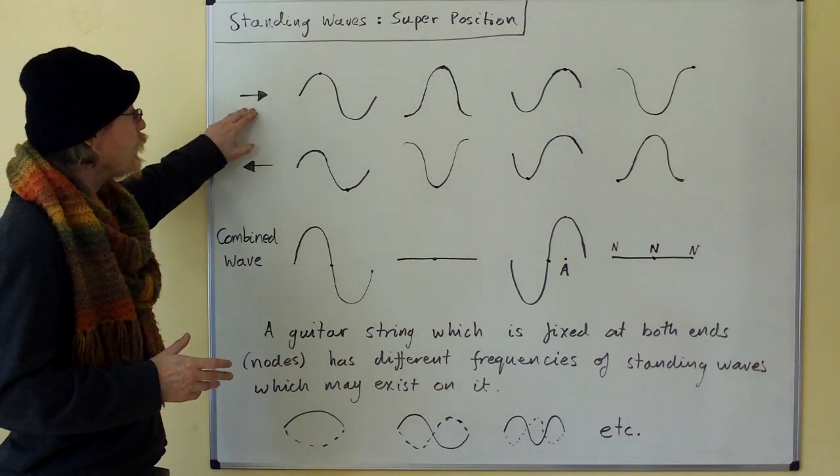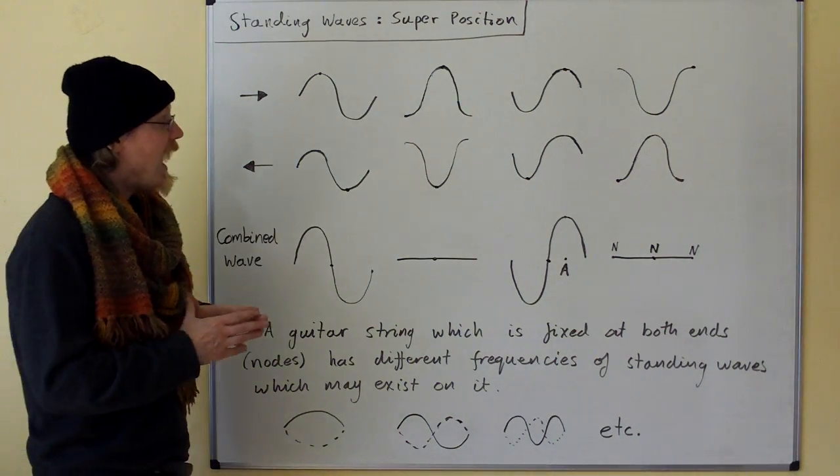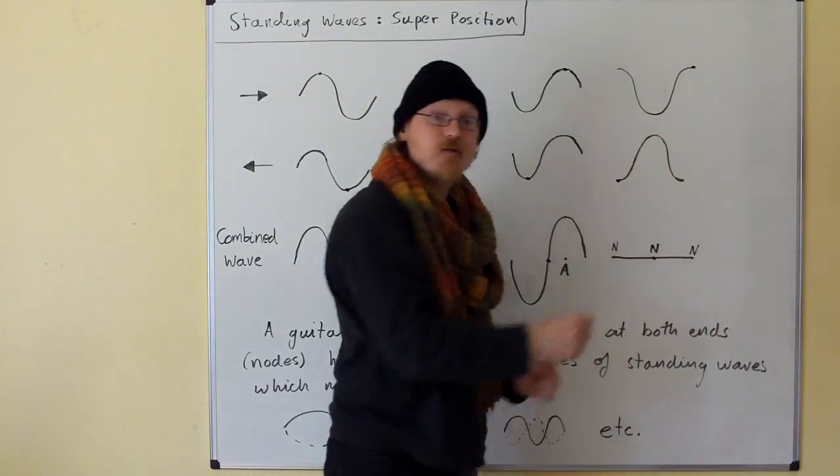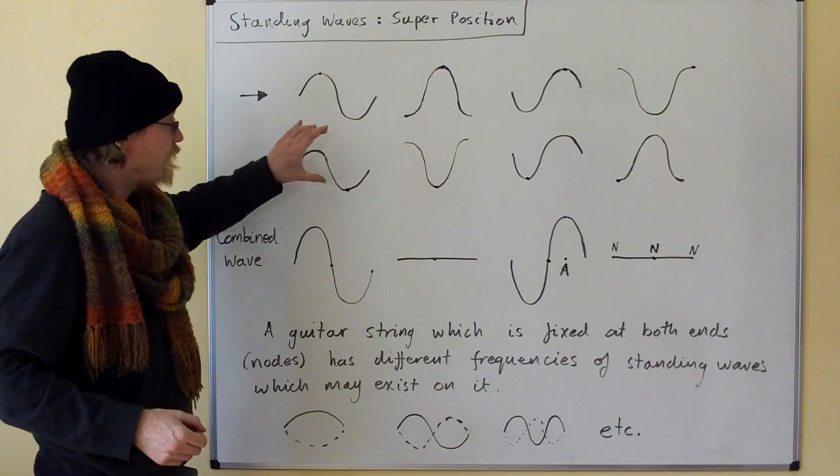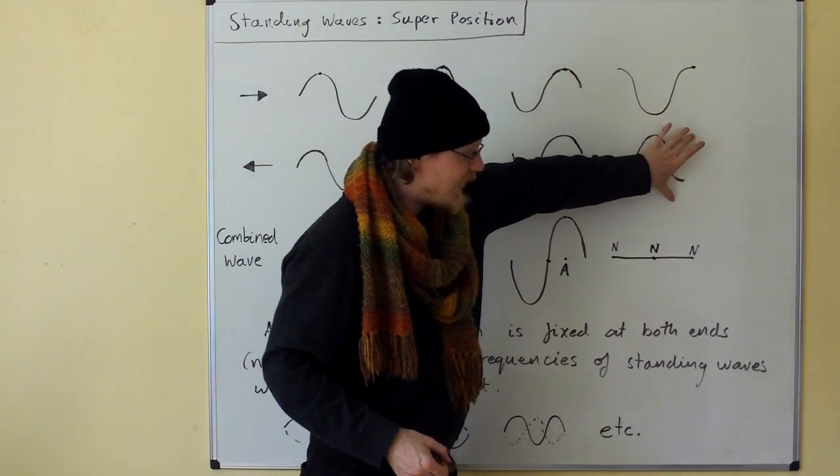Here we have a wave traveling to the right and here we have a wave traveling to the left. Each of these columns represents a different time interval. This is the first time interval, this is later in time, this is later still, and this is the latest.